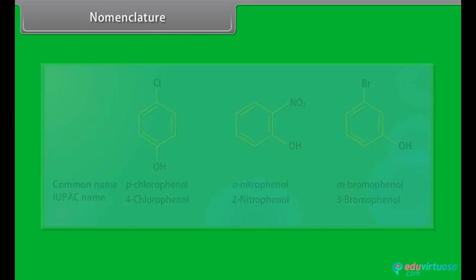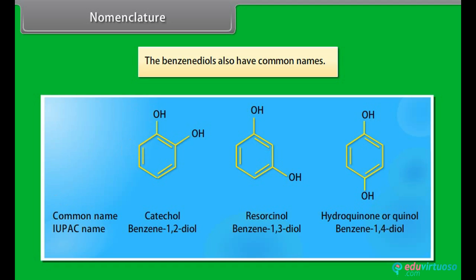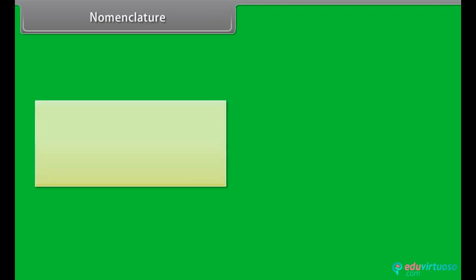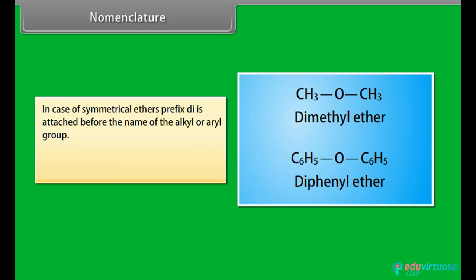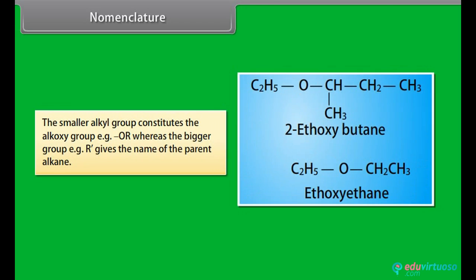Benzenediols also have common names. Nomenclature — Ethers. The common names of ethers are derived by naming the two alkyl and/or aryl groups linked to the oxygen atom in alphabetical order, followed by the word ether. In the case of symmetrical ethers, the prefix di- is attached before the name of the alkyl or aryl group. According to the IUPAC system, ethers are named as alkoxyalkanes. The smaller alkyl group constitutes the alkoxy group (e.g., -OR), while the larger group (R') gives the name of the parent alkane.